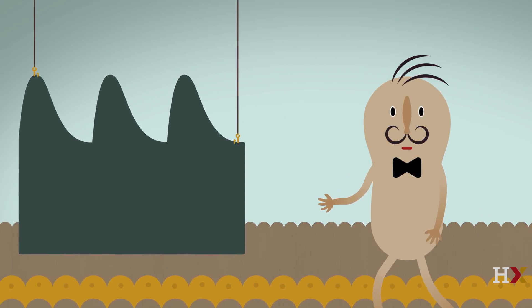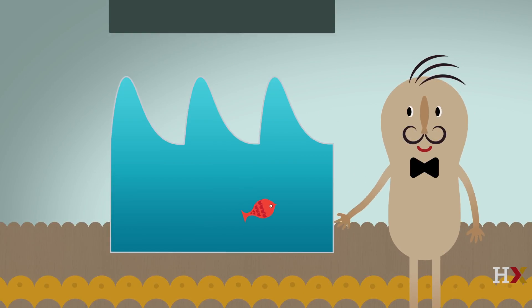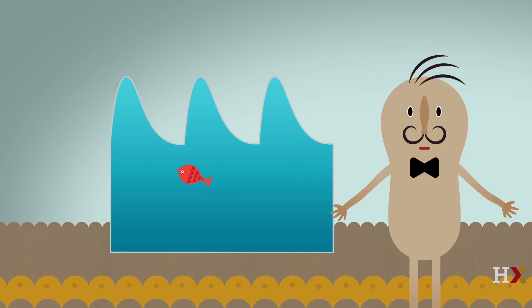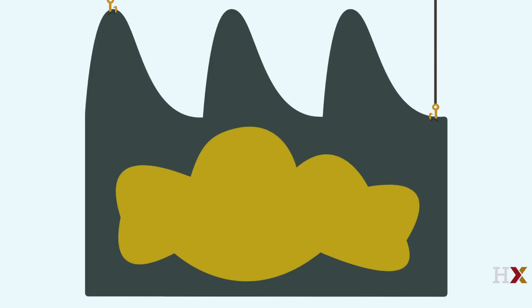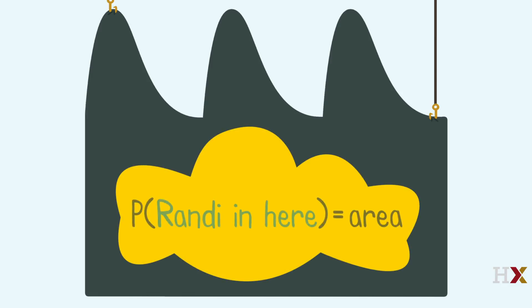And now for tonight's entertainment — this is our star, Randi. She loves swimming all around her tank randomly. Your challenge, if you choose to accept it, is to predict her horizontal position in the tank and answer questions about Randi's probabilities. Randi and her tank are two-dimensional. The area of the water is one. Each time Randi pauses, her position is uniformly random in the tank. This means the probability of her being in a particular region is the area of that region.